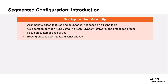The Segmented Configuration flow from AMD is a new, revamped approach from the ground up, designed to align solutions with the features and boundaries of the silicon rather than being dependent on existing tools. This has been achieved through a collaborative effort among the AMD Versal Adaptive SoC, Vivado Software, and Embedded Groups, with an emphasis on ease of use. The term segmented configuration comes from the fact that the entire booting process has been split into two distinct phases. This approach is not only scalable, but also offers a generic path for users to achieve faster boot times.